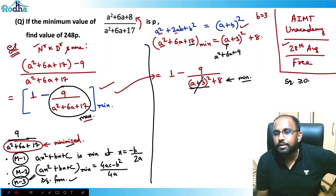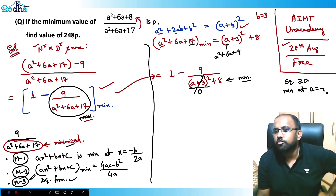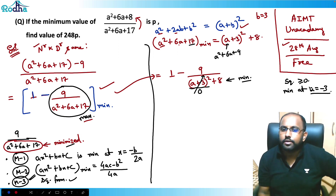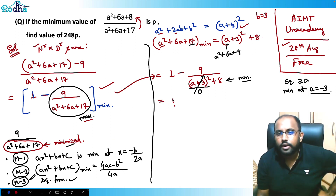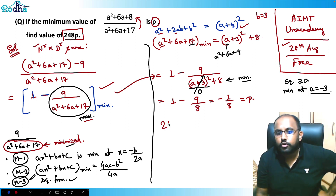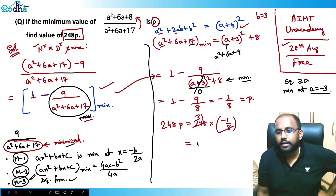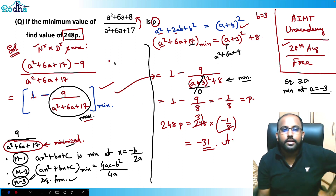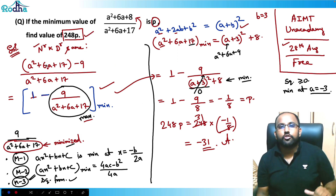The minimum value of (A + 3)² is 0, achieved at A = −3. Substituting, the denominator becomes 0 + 8 = 8. So the minimum value of the original expression is 1 − 9/8 = −1/8. Therefore P = −1/8, and the value of 248P = 248 × (−1/8) = −31. So the answer is −31.